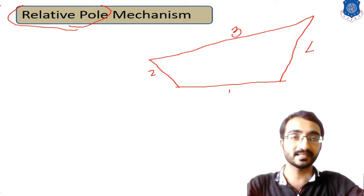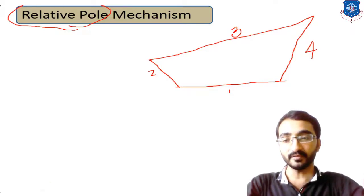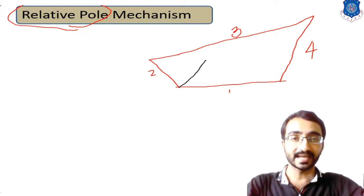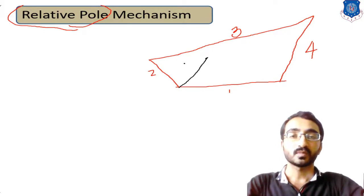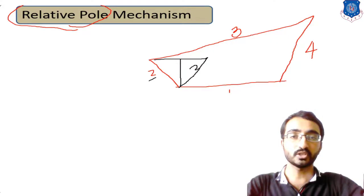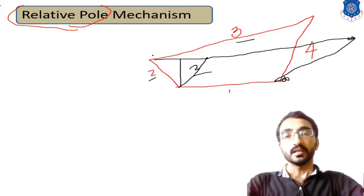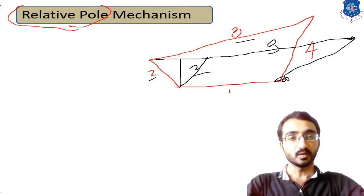Consider four links labeled A, B, C, D positioned in an initial configuration. After some time the mechanism reaches a second position — let's consider a 90-degree rotation. After this rotation, link two moves to a new position, link three moves from its original position, and link four is repositioned accordingly.